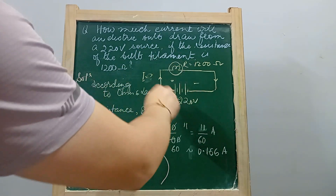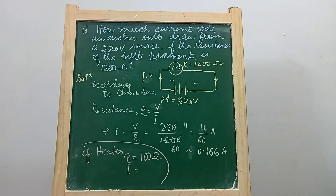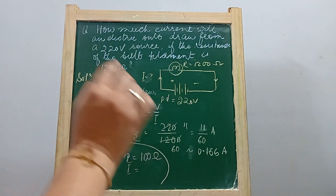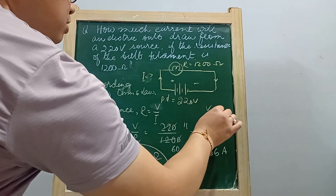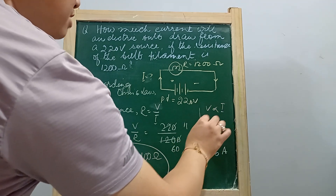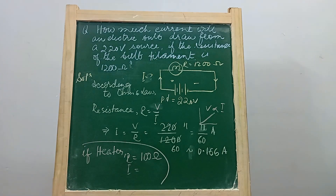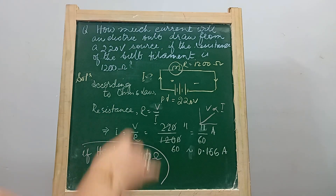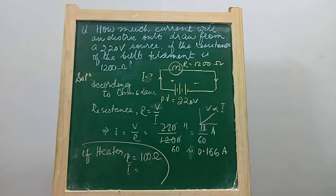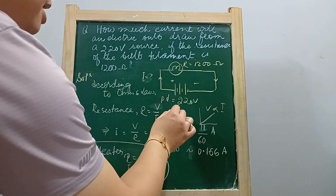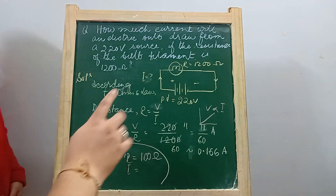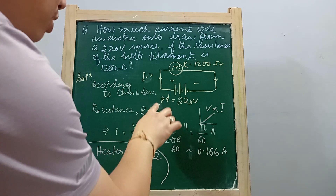The ratio of potential difference to current remains constant at constant temperature, so V is proportional to I. If you draw a graph of V and I, it will be a straight line — as V increases, I increases, and as V decreases, I decreases. That constant ratio is called the resistance R of the conductor. Its unit is volt per ampere, which is called the ohm — so one ohm equals one volt per one ampere.